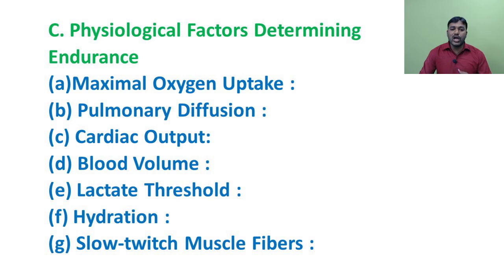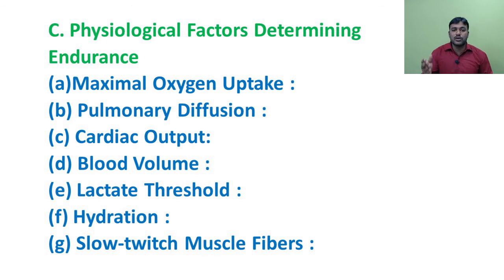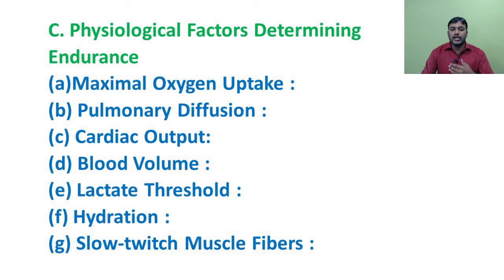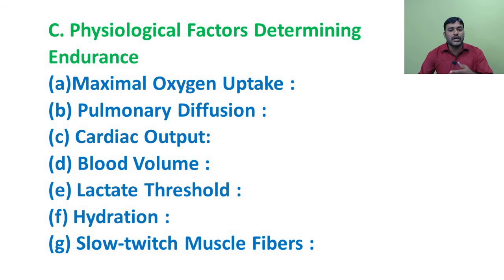Next factor: blood volume. For endurance activities, the working muscles demand considerably more oxygen and nutrients, which are transported through blood. Regular and intense endurance training increases blood volume, which determines the endurance of the person. Regarding lactate threshold: it refers to the intensity of exercise at which there is an abrupt increase in blood lactate levels. Every individual has a different lactate threshold. Better lactate threshold leads to better endurance.